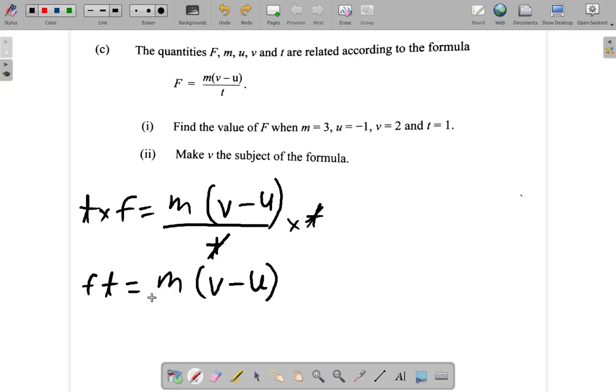Get rid of M, divide by M. M cancels M. Let me divide the working. So here, Ft over M equals V minus U.